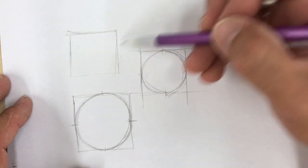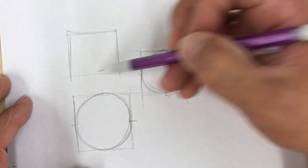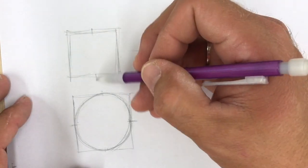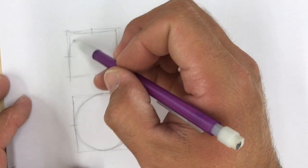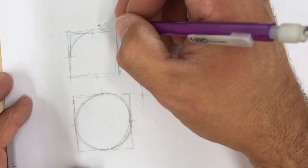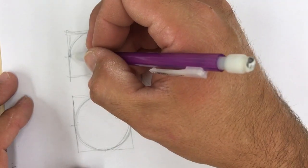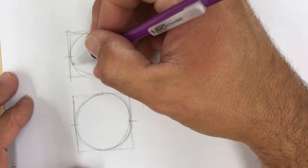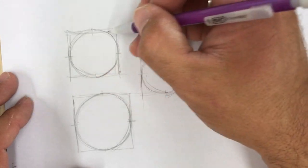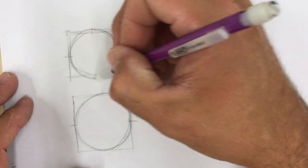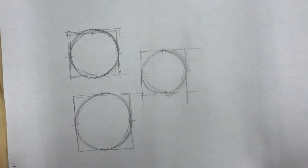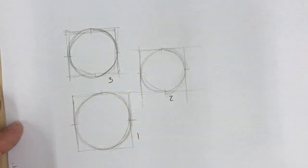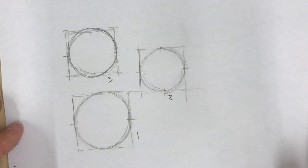So I want you to go and do at least three of these, making sure that we've got a square first, and then we once again break it down into circles or halfway, and then we put in these lines connecting. Okay, at least three: one, two, three.